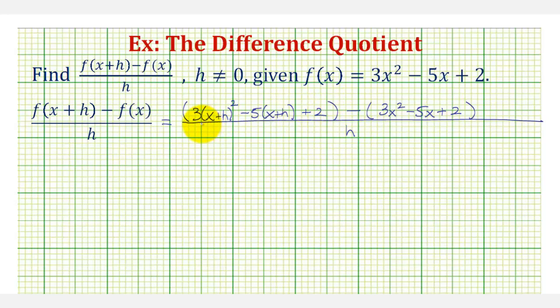Now we're going to multiply out f of the quantity x plus h, so let's first find three times the quantity x plus h squared. Let's go ahead and do this on the side. Three times the quantity x plus h squared is equal to three times the quantity x plus h, times the quantity x plus h.